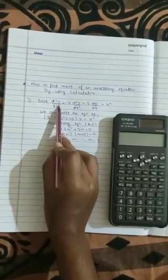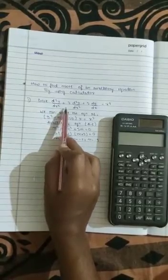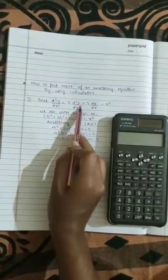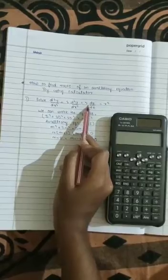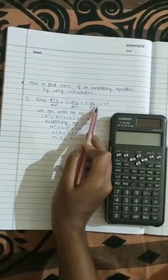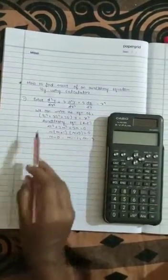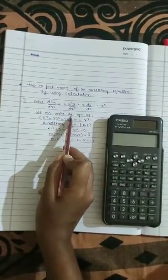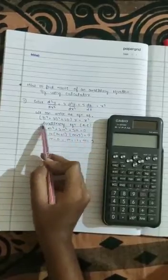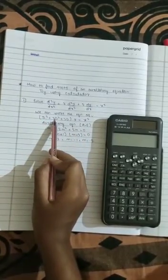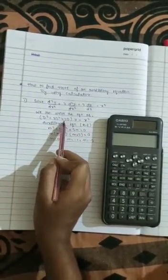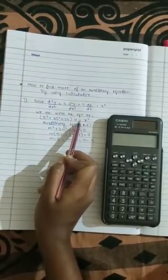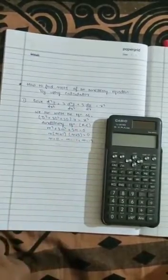We can write the equation as d³ + 3d² + 2d into y equals x².